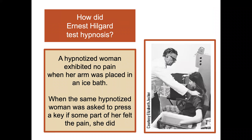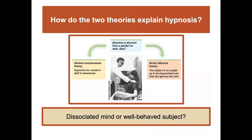How did Hilgard test this hypothesis? He would take a hypnotized person exhibiting no pain when their arm was placed in an ice bath, and when asked to press a key if some part of them felt pain, that person did. The divided consciousness theory would say hypnosis caused a split in awareness, whereas the social influence theory would say the subject is so caught up in the hypnotized role that they simply ignore feeling cold.